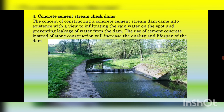Next, concrete cement stream check dams. The concept of constructing a concrete cement stream dam came into existence to infiltrate rainwater on the spot and prevent leakage from the dam. Due to such dams, water storage has increased greatly, which has raised the water level in many wells as well as the groundwater level. The use of cement concrete instead of stone construction increases the quality and lifespan of the dam.